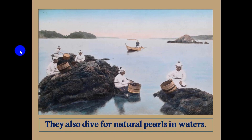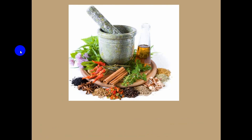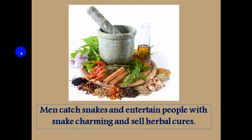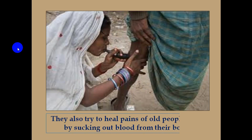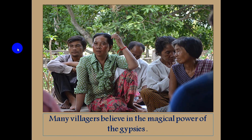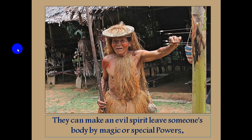Throughout the monsoon, they keep busy with fishing. They also dive for natural pearls in the waters. Sometimes they camp for a couple of weeks. Men catch snakes and entertain people with snake charming and sell herbal cures. Women go from door to door to sell bangles, cosmetics and other things. They also try to heal pains of old people, often by sucking out blood from their body. Many villagers believe in the magical power of the gypsies. They can make an evil spirit leave a woman's body by magic or special powers.